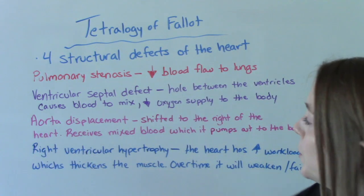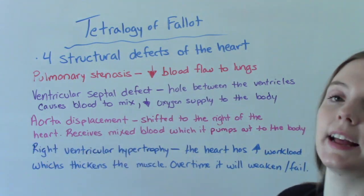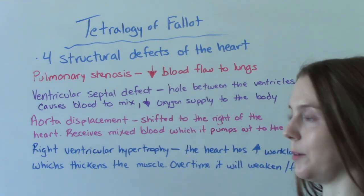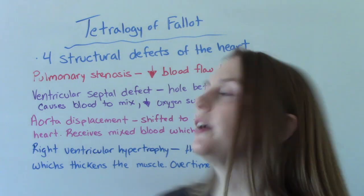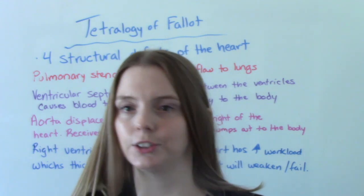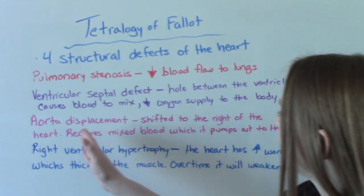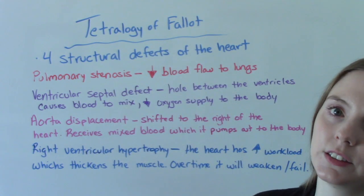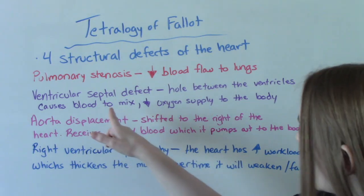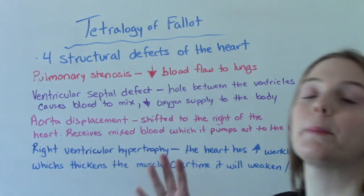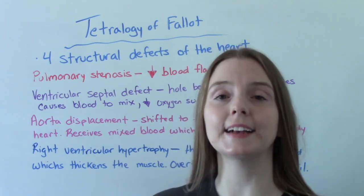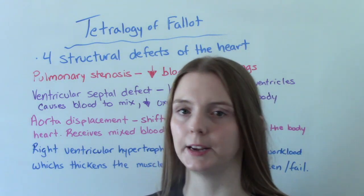The third one is that the aorta is slightly displaced. In normal anatomy, your aorta is a little bit more towards the left of the heart. In this condition, it is shifted towards the right, and it receives that mixed blood and pumps it out to the body. So less oxygenated blood is going to the body.